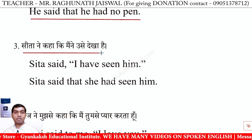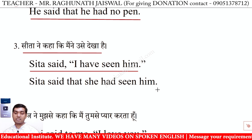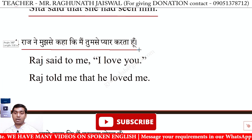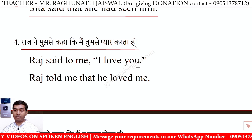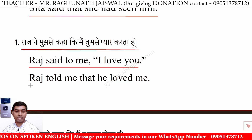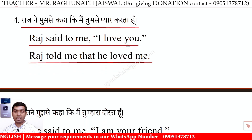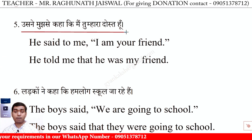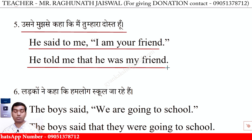Tita ne kaha ki maine use dekha hai. Tita said, 'I have seen him.' Tita said that she had seen him. Raj ne mujhse kaha ki mein tumse pyaar karta hoon. Raj said to me, 'I love you.' 'Said to' becomes 'told.' Raj told me that he loved me — 'love' becomes 'loved.' Us ne mujhse kaha ki mein tumhara dost hoon. He said to me, 'I am your friend.' He told me that he was my friend.